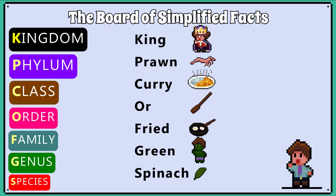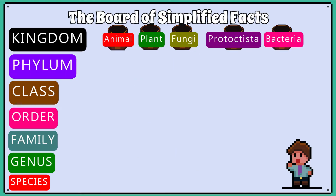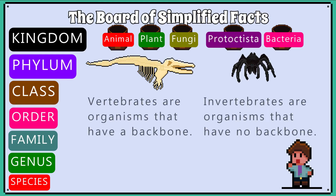King prawn curry or fried green spinach is a mnemonic that can help us remember the hierarchical system in which we organise all living things on earth. You need to learn the five kingdoms and be aware of the terms vertebrates, which are organisms that have a backbone, and invertebrates, which are organisms that have no backbone.